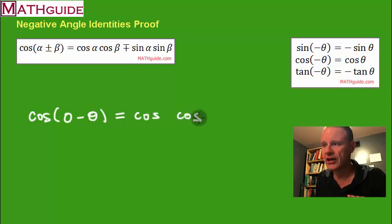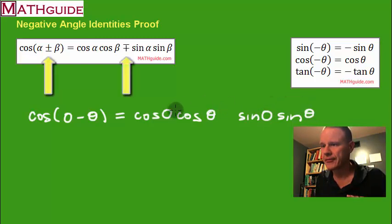And this one's a little bit different. This one's cosine, cosine, sine, sine. Filling in the angles, I've got zero, theta, zero, theta. If this is a minus, this is the opposite. It's plus. So let's evaluate.